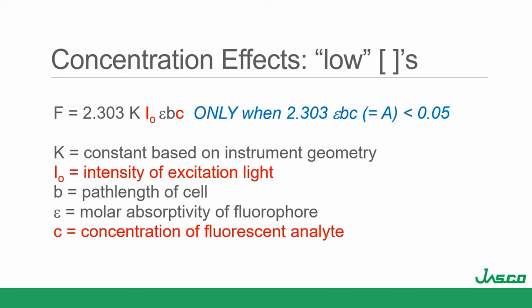Since we mentioned concentration — what about concentration effects at low concentration? For the Beer-Lambert law to apply, we're at low concentrations and lower absorbances. Beer's law has the term epsilon DC — that's absorbance. So increases in concentration are going to produce increases in fluorescence. We also have the I-naught term: the intensity of the excitation light is going to impact the fluorescence intensity.